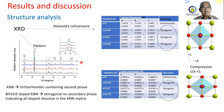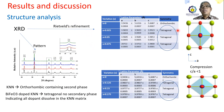Based on the XRD analysis, the undoped KNN has orthorhombic structure containing a secondary phase. After doping, the sample becomes tetragonal and no more secondary phase is detected, indicating that all dopants dissolve in the KNN matrix. Rietveld refinement confirms that the sample has tetragonal structure, which is elongated for X below 0.075 and compressed for X higher than 0.125.